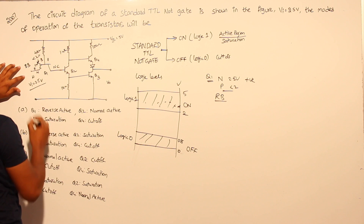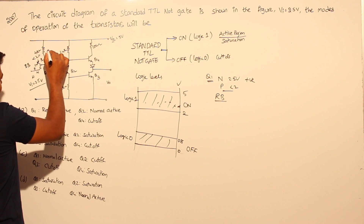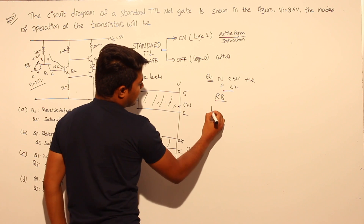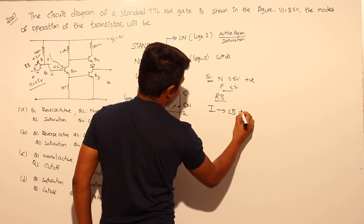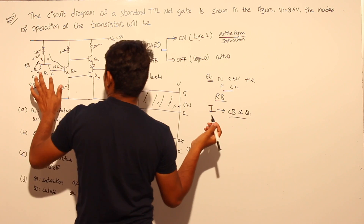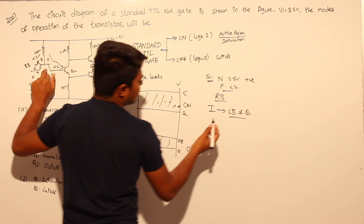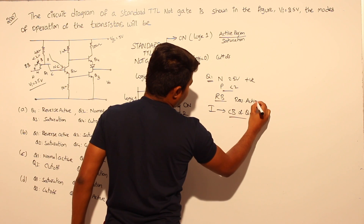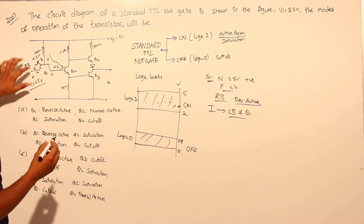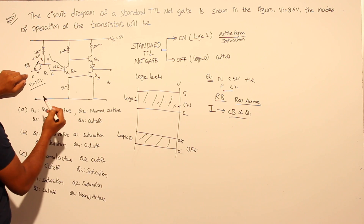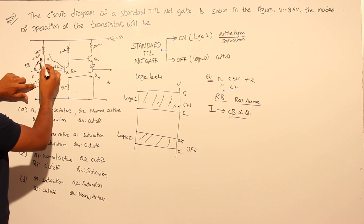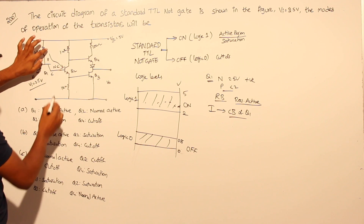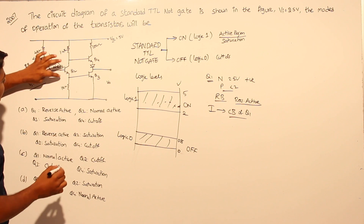Because Q1's emitter-base junction is reverse biased, no current flows through that path. The entire current must flow through the collector-base junction of Q1. The input is 2.5 volts and the other side is about 2 volts, confirming reverse bias. This means Q1 is operating in the reverse active region.